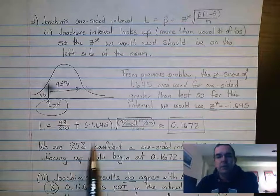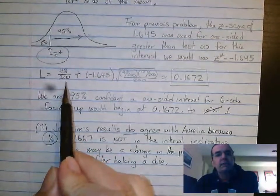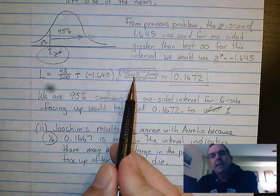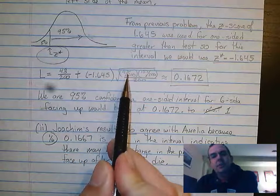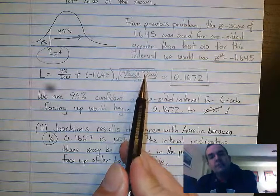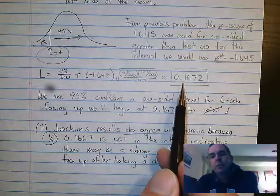What I'm going to do with that then is fill that in for my confidence interval. So here's my statistic: 43 out of 200 plus negative 1.645 times 43 out of 200 times 157 out of 200 divided by 200. That's going to give you a lower bound of 0.1672.